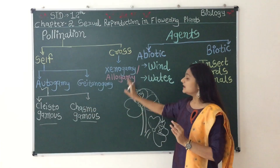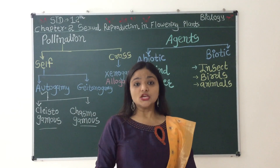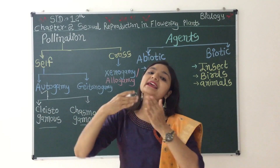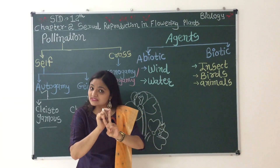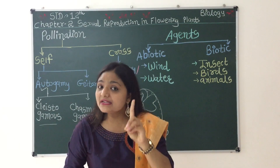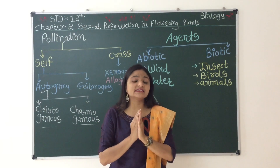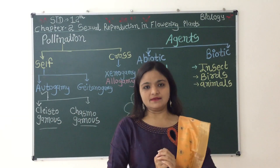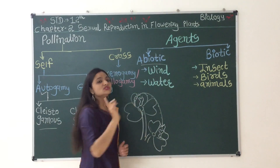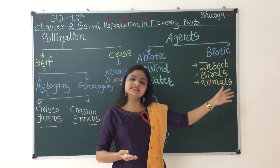When cross-pollination occurs between different plants, we need agents — pollinators — to carry the pollen. The agents responsible for the pollination process include wind, water, insects, birds, and animals. These agents are of two types, dear students: biotic and abiotic. Biotic means living agents — birds, insects, and animals. Abiotic means non-living agents — wind and water.